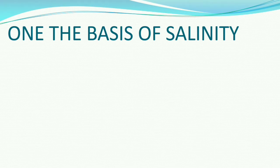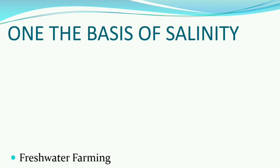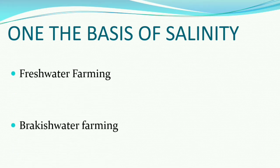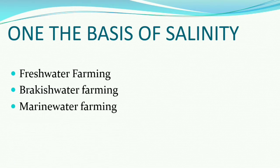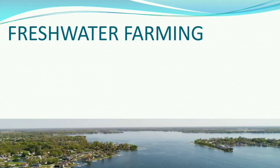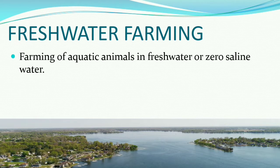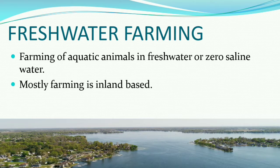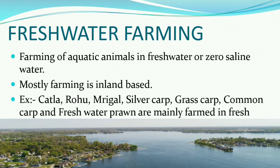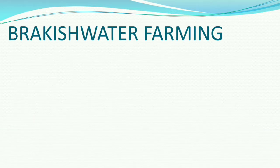On the basis of salinity, aquaculture is divided into three types: fresh water farming, brackish water farming, and marine water farming. Fresh water farming is the farming of aquatic animals in fresh water or zero saline water — farming in ponds, lakes, etc. — and mostly this farming is inland based. Examples include katla, rohu, regal, silver carp, grass carp, common carp, and fresh water prawns.